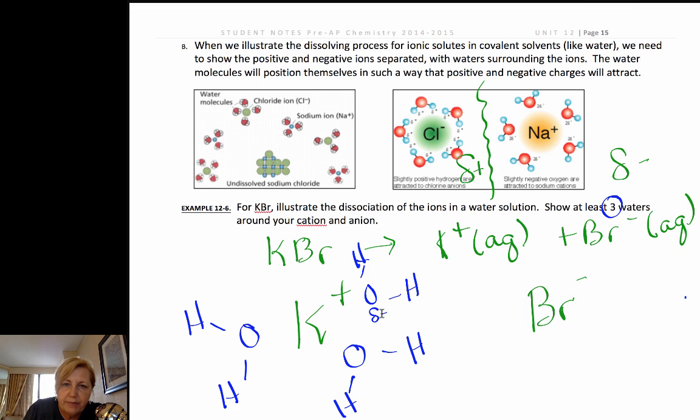And to show that partially negative, let me put that partially negative. Now to show this attraction again we remember we use dotted lines if we're going to try to show that attraction. And this would be called an ion-dipole attraction. The dipole is the permanent separation of charge that gives us the polar nature of water.